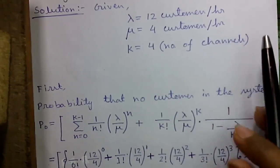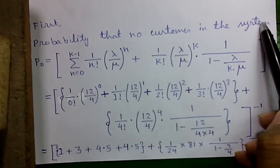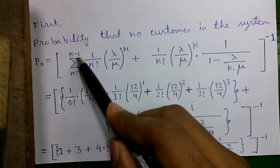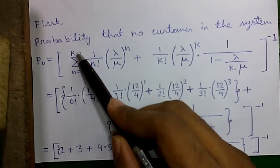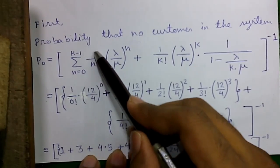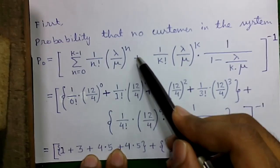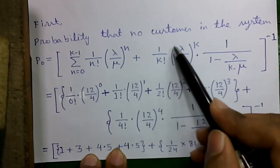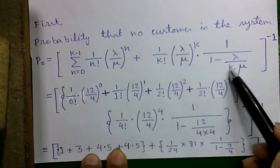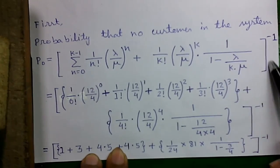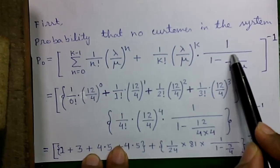First, the probability that there is no customer in the system (service center is idle), P0, is given by: summation from n=0 to k−1 of [1/n! × (λ/μ)^n] plus [1/k! × (λ/μ)^k × 1/(1 − λ/(k×μ))], all to the power of −1. The formula looks complex but I will explain it in easy language.